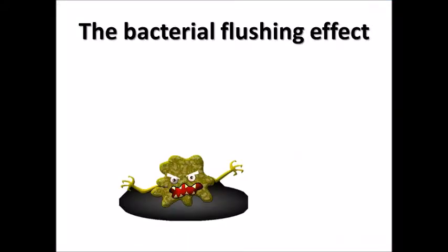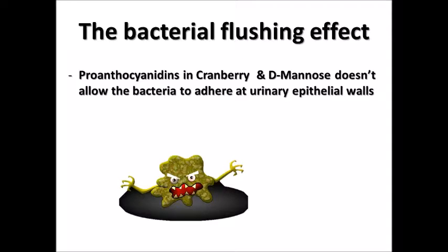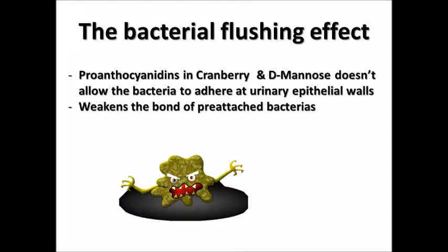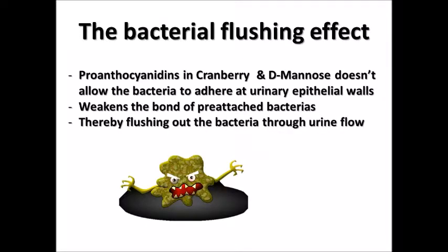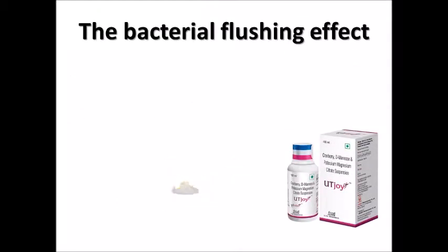The final effect of UTJ is the bacterial flushing effect. Since proanthocyanidins and D-mannose do not allow any free hand or free space on the fimbria, the bacteria is not able to attach to the uroepithelial wall. Additionally, it weakens the bonds of pre-attached bacteria. Due to this, the bacteria get flushed out through urine flow. This is the ultimate effect of UTJ on bacteria, majorly E. coli.